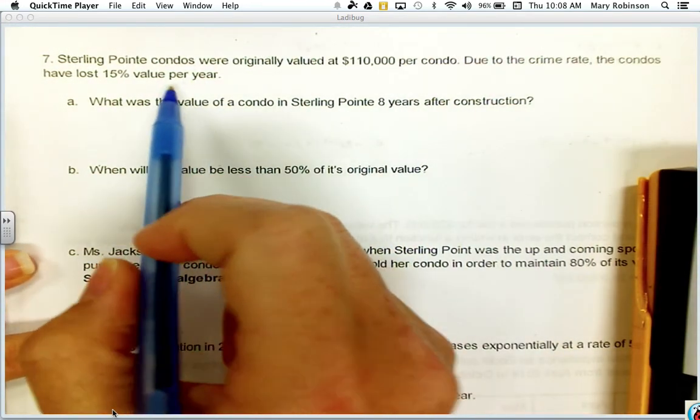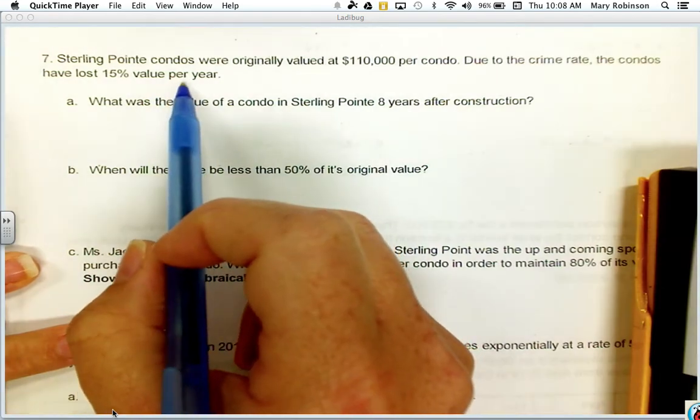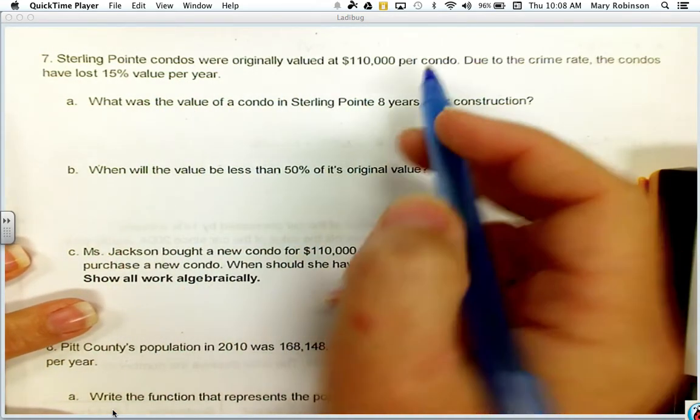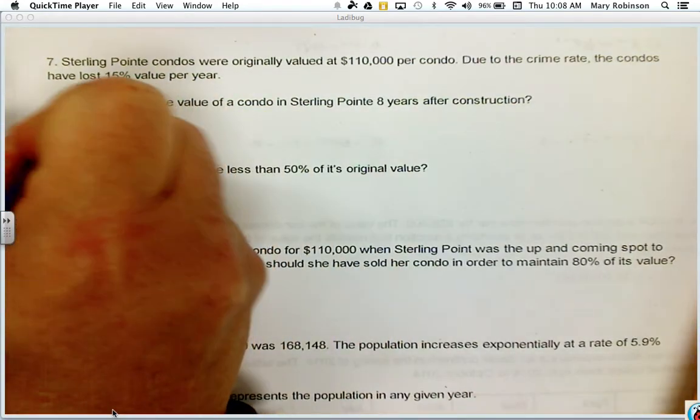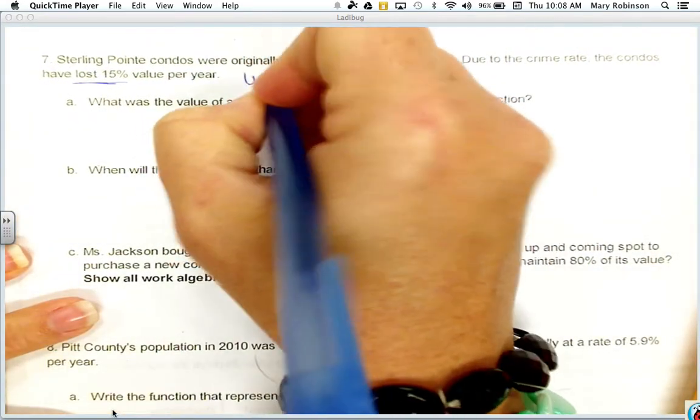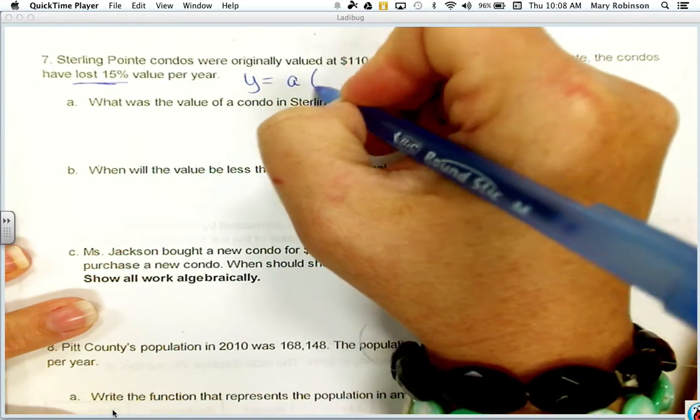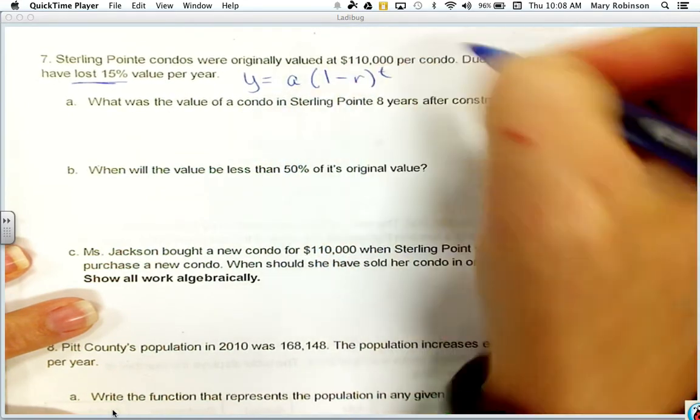The first thing we need to do when looking at these problems is to identify what type of equation would be appropriate. Since it says that it is losing value, we should think about our depreciation formula: Y equals A times 1 minus R to the T power.